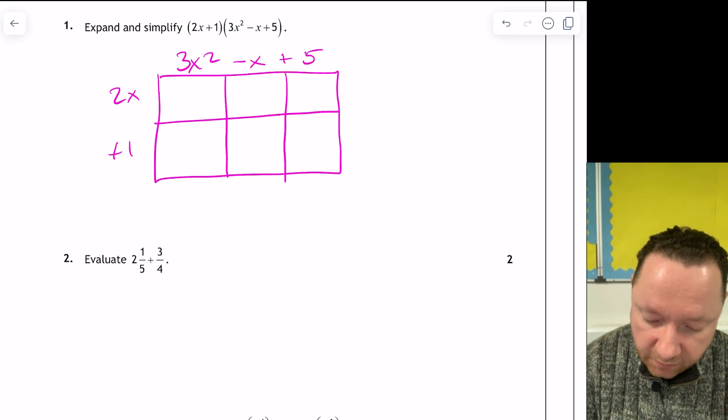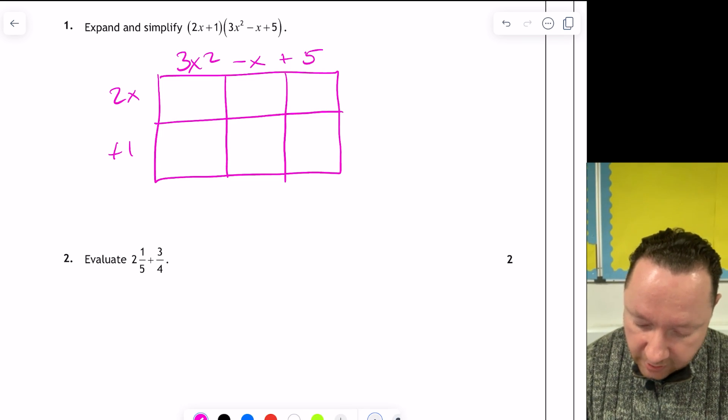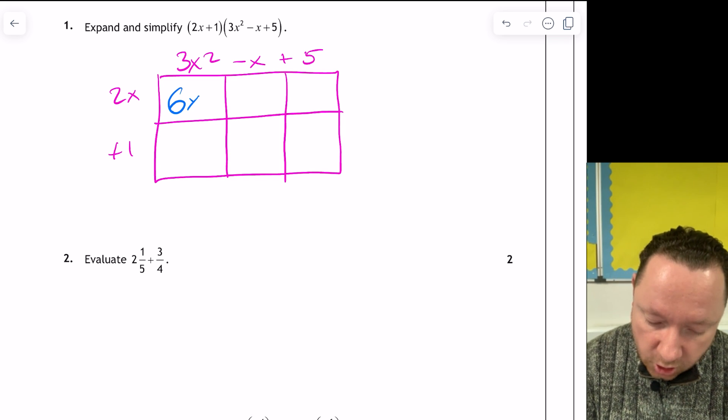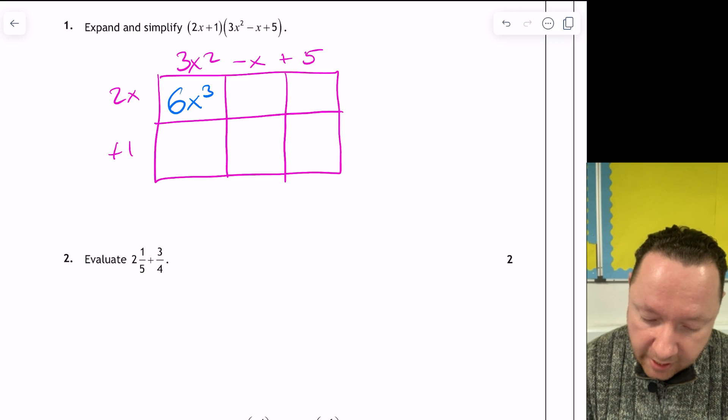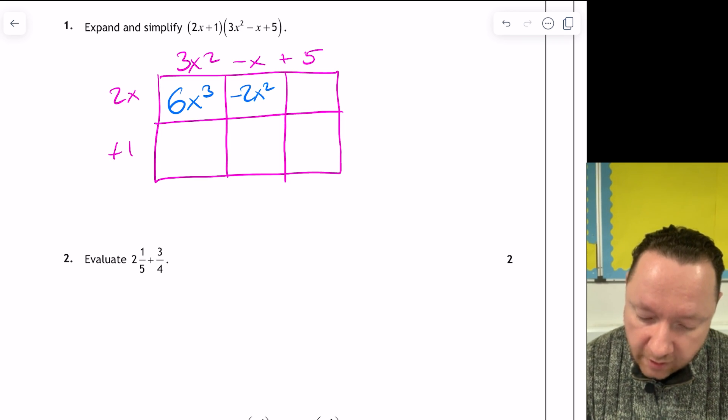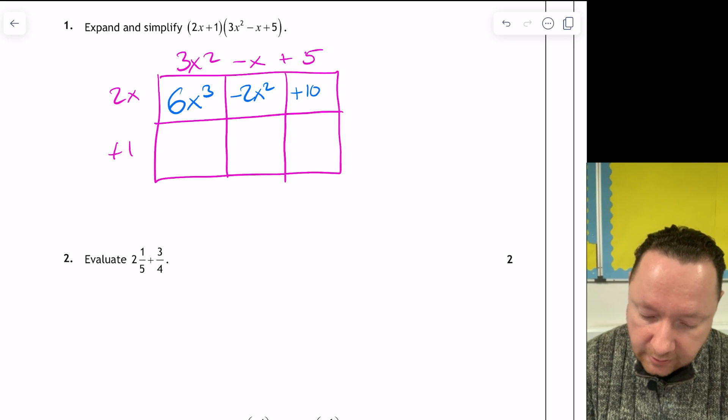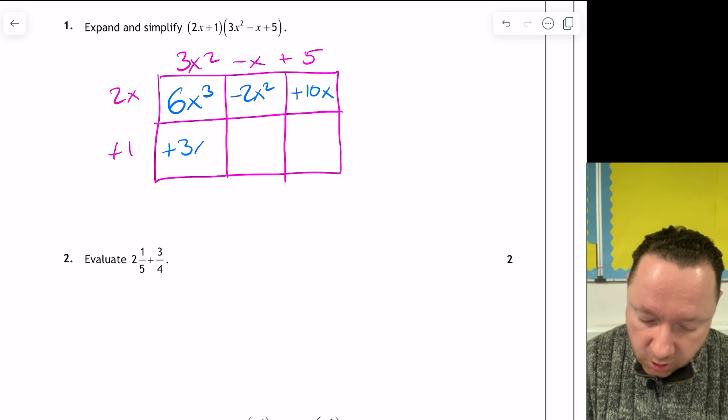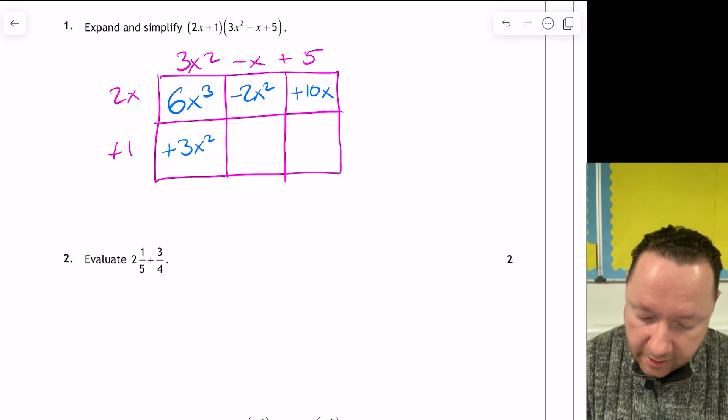Times everything together. I'll use a different colour for the answers. So I've got 2 times 3 is 6, so I'll get 6x cubed. 2x times x is 2x squared, and watch out for the minus. 2 times 5 is 10, so it's plus 10x. 1 times 3 is 3x squared.